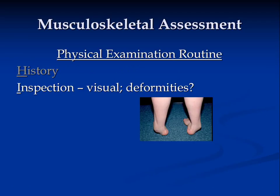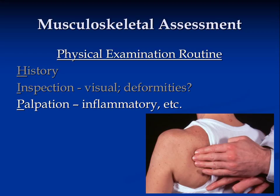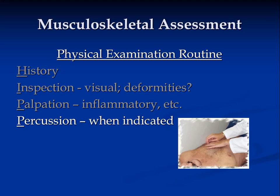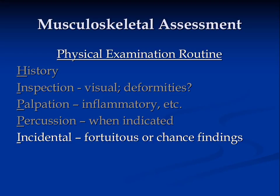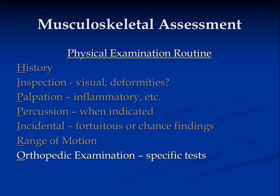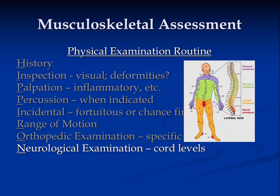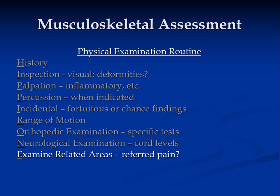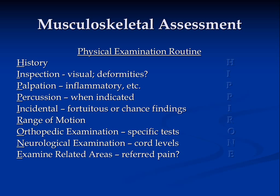Our inspection includes looking for obvious deformities. Palpation is for inflammation. Percussion, when indicated. We also note incidental, fortuitous, or chance findings. Range of motion is assessed, and our orthopedic exam includes specific tests for each joint — we'll discuss these in more detail in the individual modules. We conduct our neurological examination at cord level and examine related areas. This is the HIPPERONE model that we'll use in every instance of our physical exam routine. This completes the introductory module of our musculoskeletal assessment.